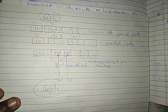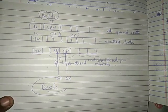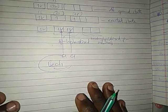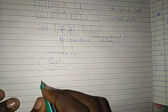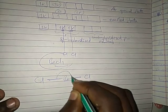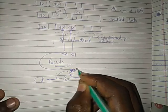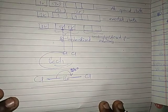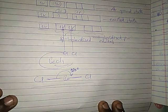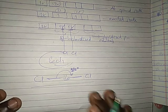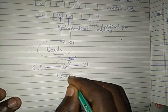In sp hybridization, the bond angle between the orbitals is 180 degrees. For beryllium chloride, we can draw: chlorine — beryllium — chlorine, with an angle of 180 degrees. The shape of the molecule in sp hybridization appears straight, which is also called linear.